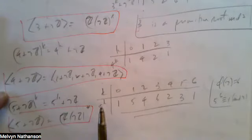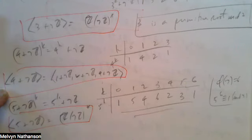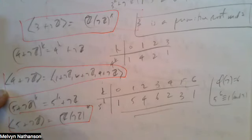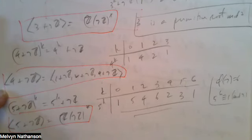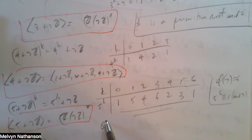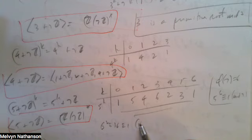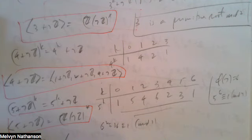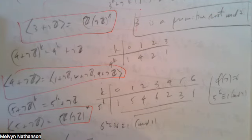The last element to check is 6+7Z. For its cyclic subgroup: 6²=36≡1 mod 7. So this subgroup consists of just two congruence classes: {1+7Z, 6+7Z}.